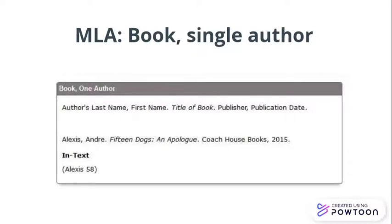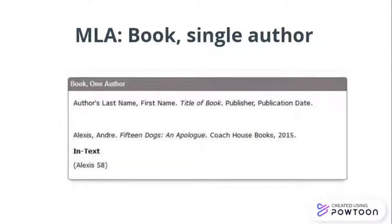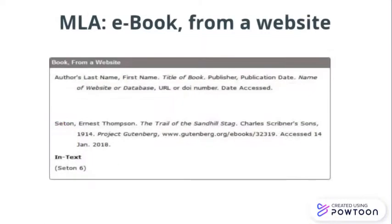In this case, an MLA in-text citation consists of the author's last name and a page reference. The list of works cited contains more information and is formatted in a very specific way — for example, the title is italicized. And if you need more room, like this example of an e-book from a website, every new line is indented to the right.